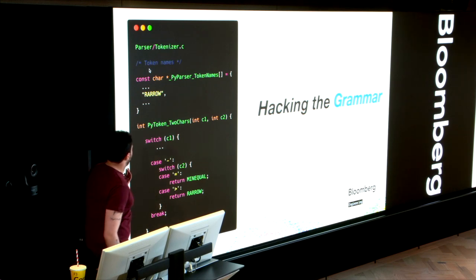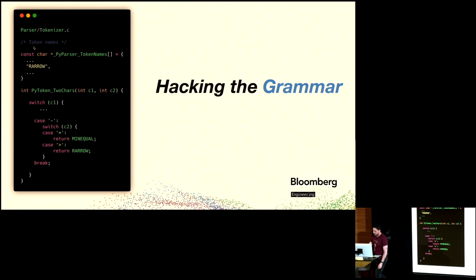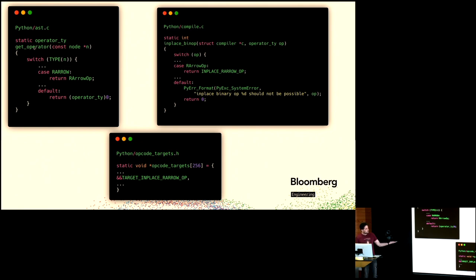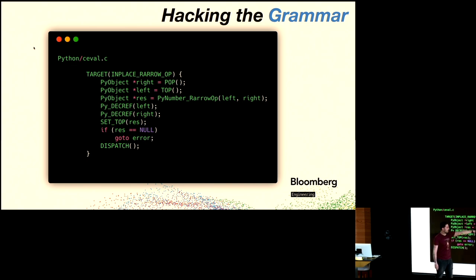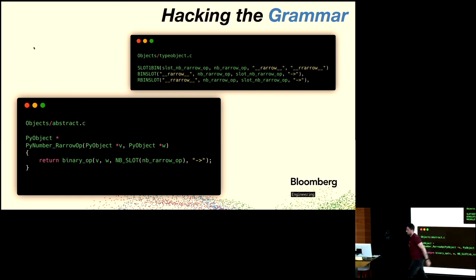Then you go to the tokenizer and describe how to parse the token: find a minus sign followed by a greater-than sign, and return the arrow token. Running the tokenizer, you can already see it parses the arrow correctly — very simple to do. Three lines in the AST are all you need there. Finally, you implement the actual operator — the bytecode for 'a -> b' pops a and b, calls the arrow function, and continues the interpreter. Then declare the dunder method. Again, just a few lines plus a header file.